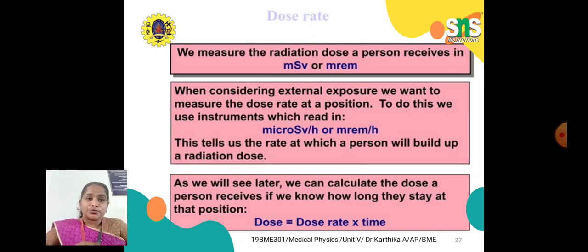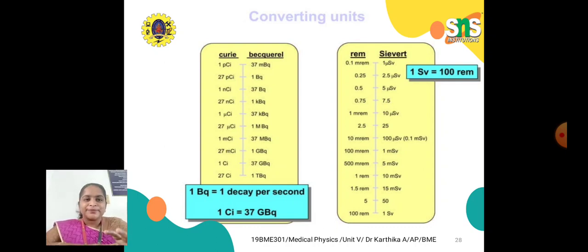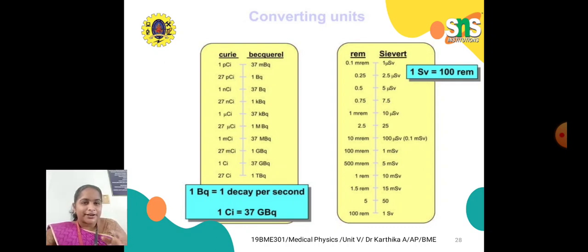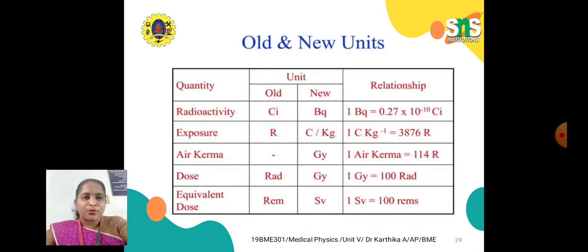We measure radiation dose a person receives in millisievert or millirem. For external exposure, units are microsievert per hour or millirem per hour. Dose equals dose rate multiplied by time of exposure, so the time period of exposure is very important. For unit conversion: 1 Becquerel equals 1 disintegration per second, 1 Ci equals 37 GBq, and 1 Sievert equals 100 rem.